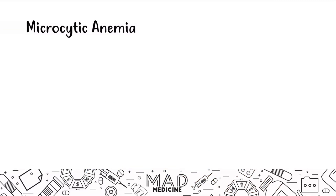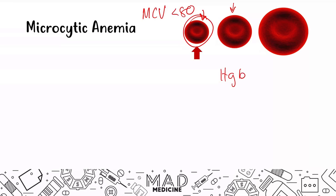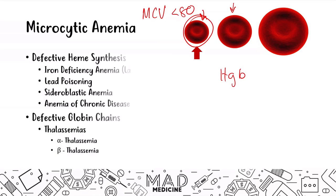So with that being said, let's talk about microcytic anemias. These are going to be anemias that have an MCV that's going to be less than 80, which just means you're going to have a small red blood cell compared to the normal red blood cell. These are all going to be due to defects in hemoglobin synthesis — either defective heme synthesis or defective globin chains.